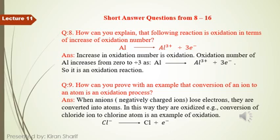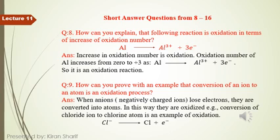Question number 9: how can you prove with an example that converting of an ion to an atom is an oxidation process? A negative ion loses electrons and is converted into an atom. When a negative ion loses electrons, the atom is formed and we say it is oxidized. For example, a chloride ion converting to a chloride atom is an example of oxidation — loss of electron is oxidation.